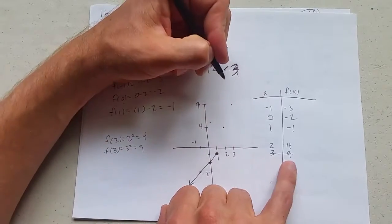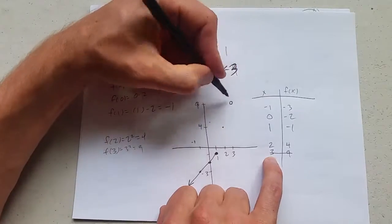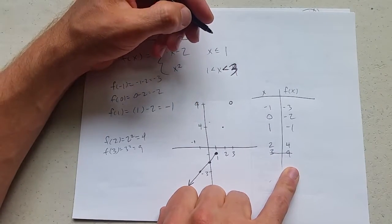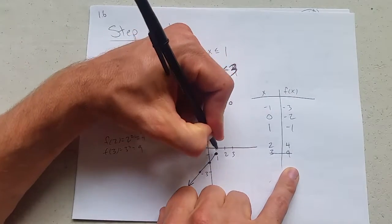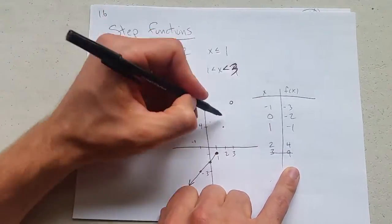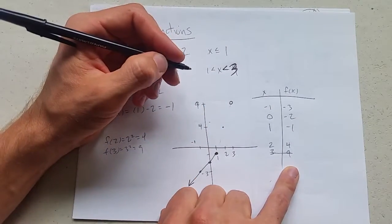Now we want to be careful. We don't actually use the x value of 3. So we're going to go close to this point, but we're not going to include it. Now it's tempting to just draw this straight in here with a line segment, but that's not what the graph actually looks like.